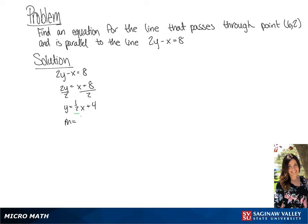So the slope for the line that is parallel to this will be 1 half as well. Now we're going to use point slope form, which will give us y minus 2 equals 1 half times (x minus 6).